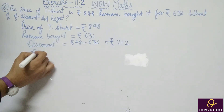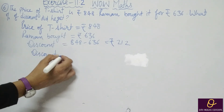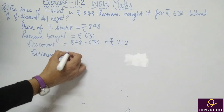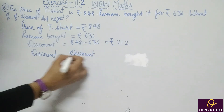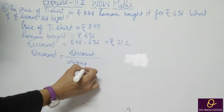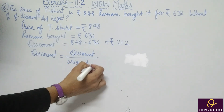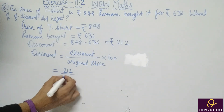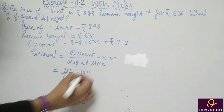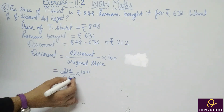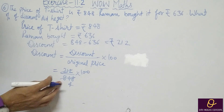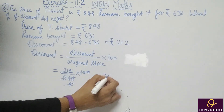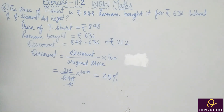Discount percent equals discount divided by original price (marked price) into 100. That equals 212 divided by 848 into 100. Cancelling by 4: 212 divided by 4 is 53, and 848 divided by 4 is 212 — cancelling again gives 25%. So the discount is 25%. Thank you so much for watching my video, and have a great day.